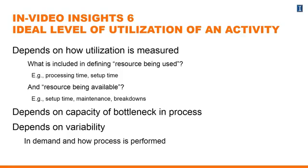The second thing is it depends on the capacity of the bottleneck in the process. The bottleneck determines the throughput rate of the whole process — if you have an activity that is taking longer than all the others, it determines the throughput rate. For the bottleneck, you hopefully want to achieve the maximum possible utilization based on the theory of constraints. But do we want high capacity utilization for the non-bottleneck tasks? The answer is no, because otherwise you're going to have a lot of work-in-process inventory building up.